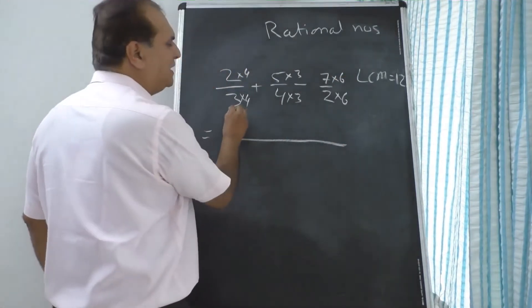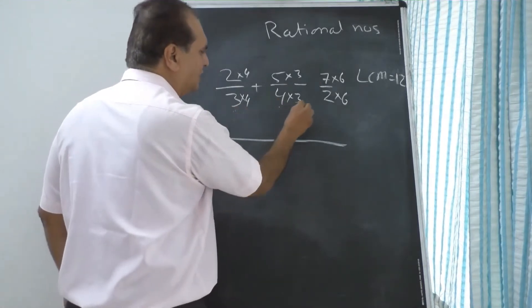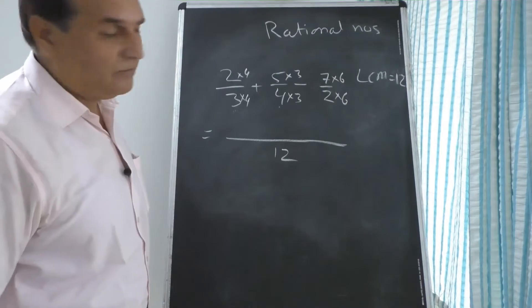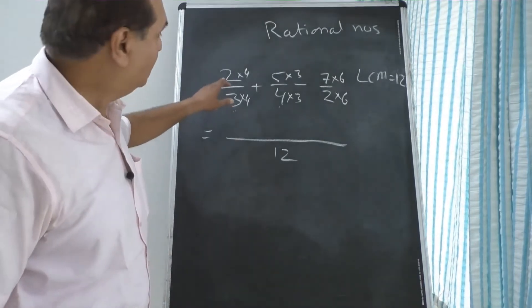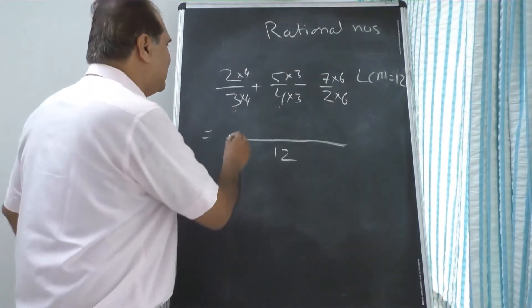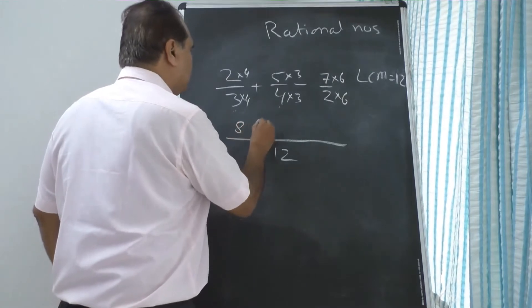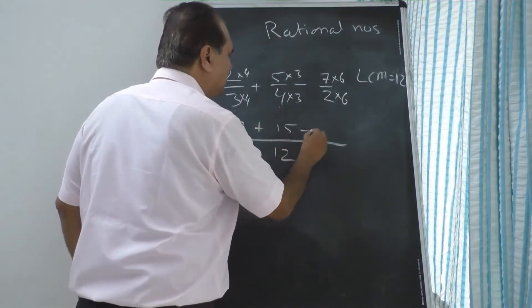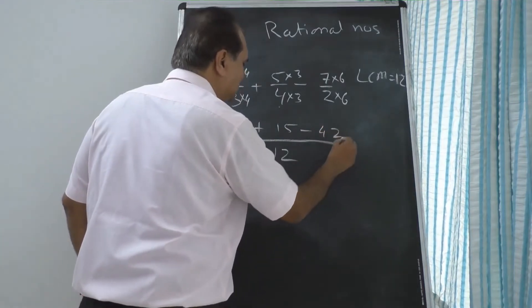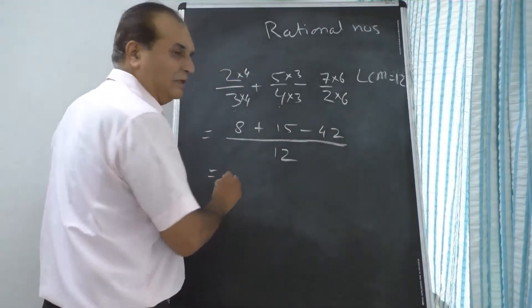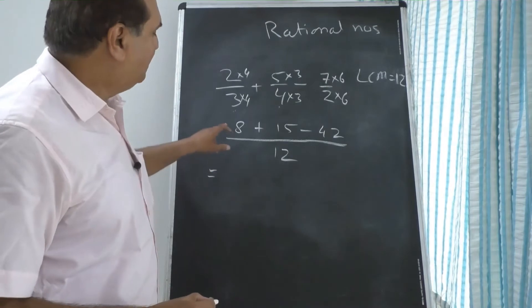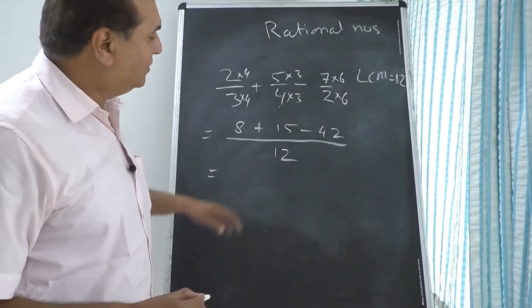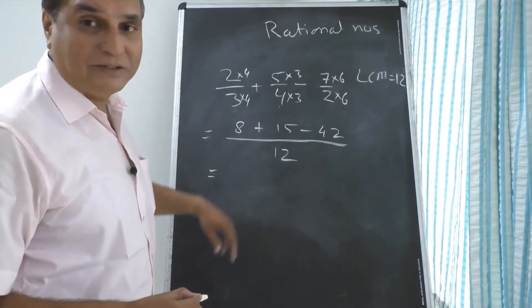Now denominator is 3 into 4 = 12, 4 into 3 = 12, 2 into 6 = 12. Denominator is common. Now find out the new numerator: 2 times 4 is 8, plus 5 times 3 is 15, minus 7 times 6 is 42. That equals 15 plus 8 is 23, so 23 minus 42.